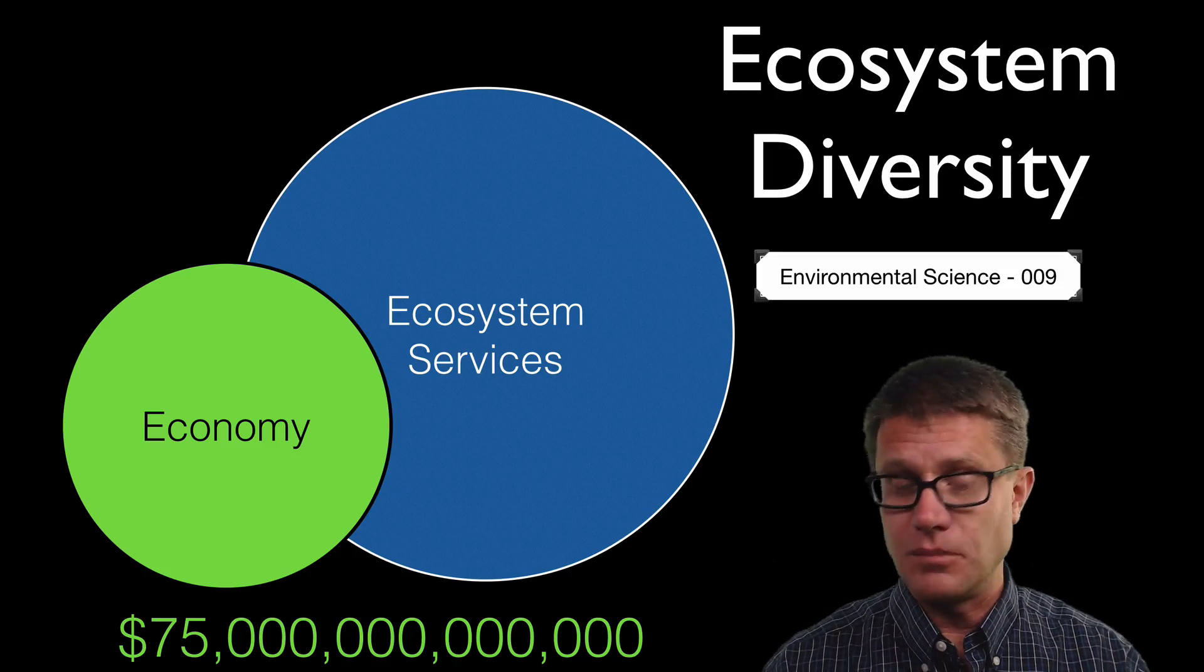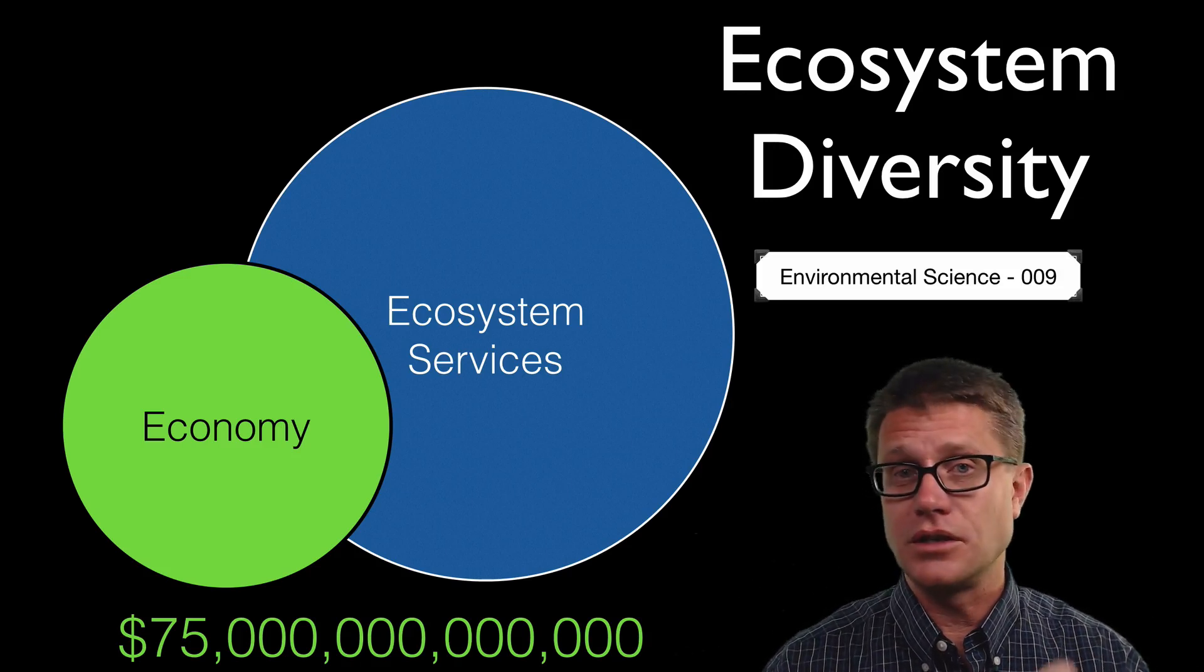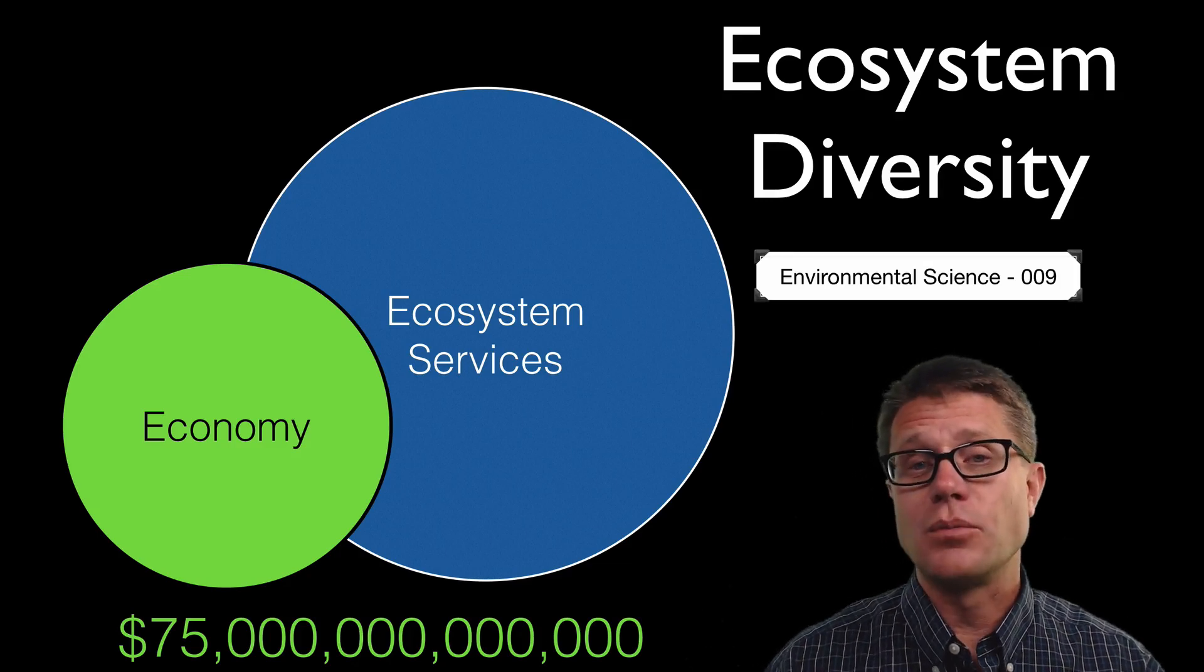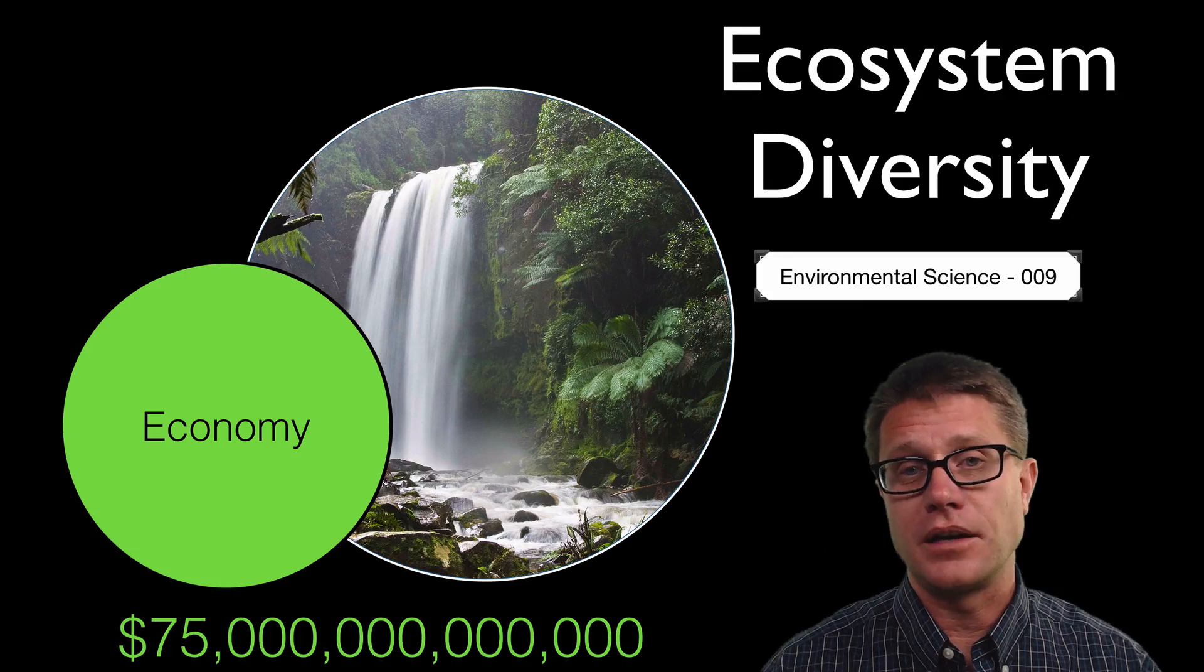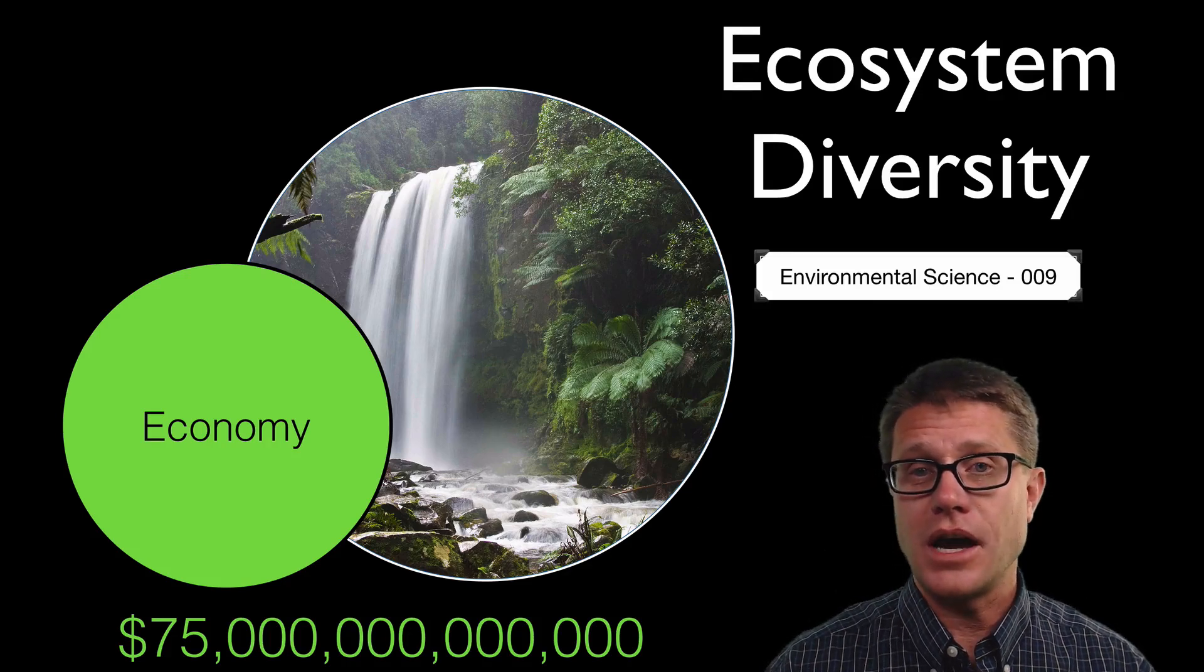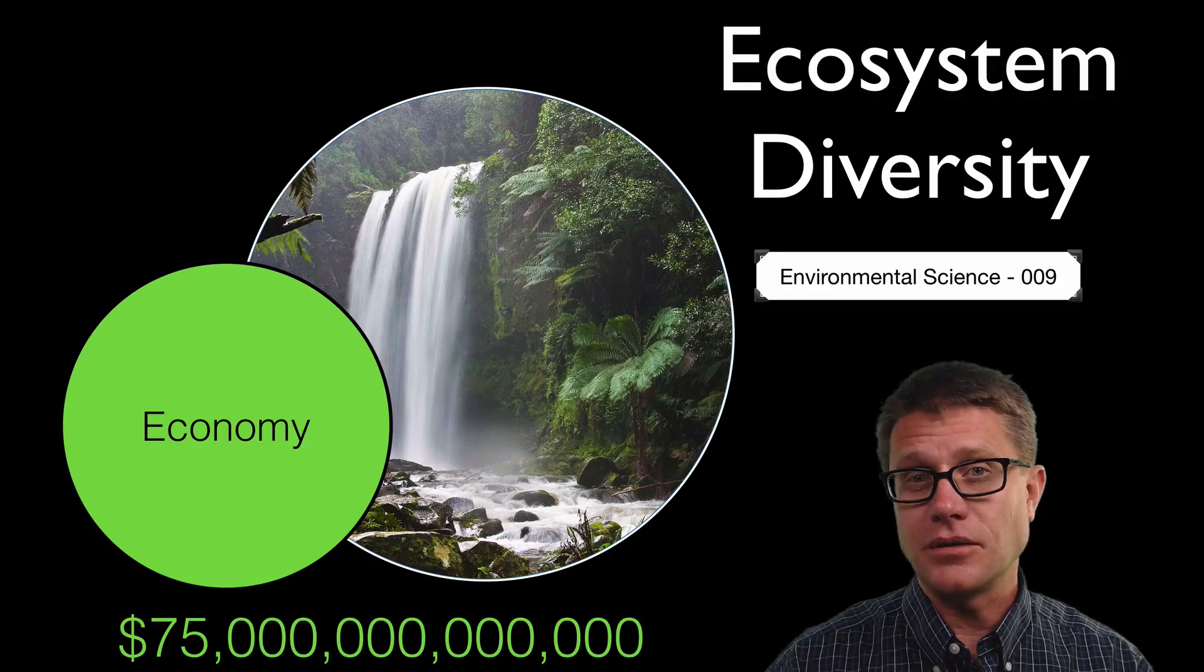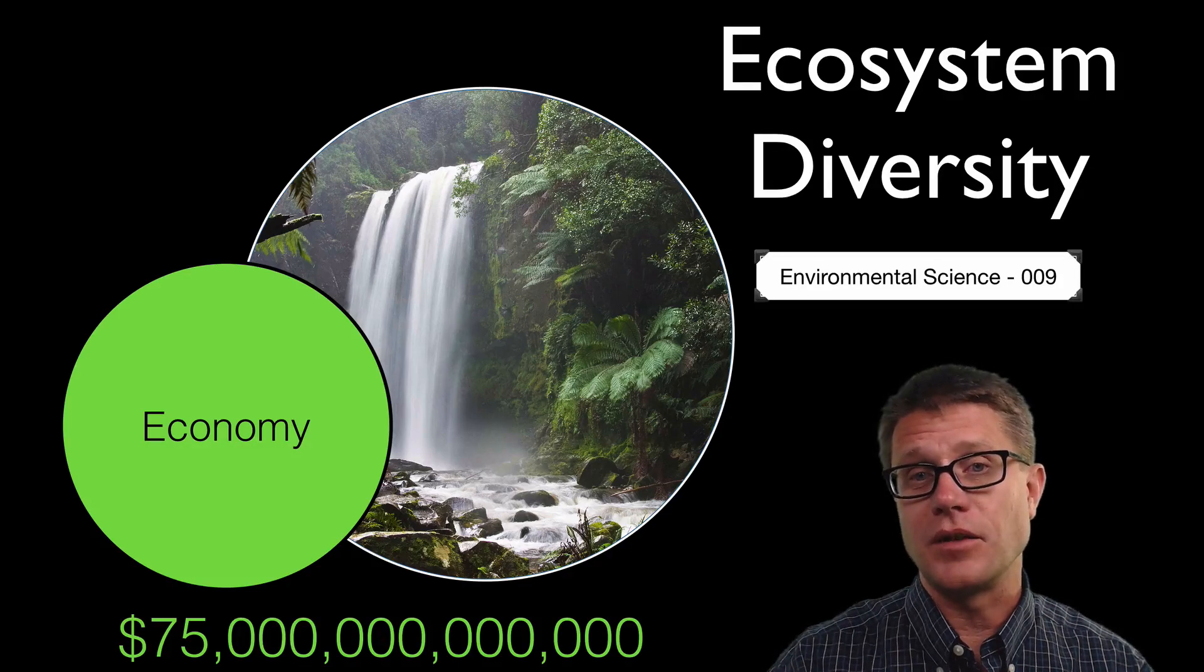In other words it makes oxygen, makes soil, recycles nutrients, filters water. It is doing that for free and it is more efficient the more diverse the ecosystems on our planet are. The more diversity we have the better it is for ecosystem services. As we degrade ecosystems we are going to have to take on some of that cost.